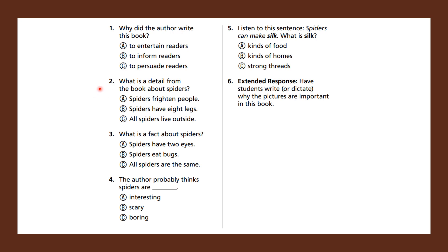Number two: what is a detail from the book about spiders? 'Spiders frighten people' — did it talk about spiders frightening people? I don't even remember that being said in the story, so that cannot be the answer. 'Spiders have eight legs' — we kept saying that over and over again. Or 'all spiders live outside' — we know that's not true, because the story said spiders live inside and outside. So the answer must be B: spiders have eight legs. That's a detail from the book.